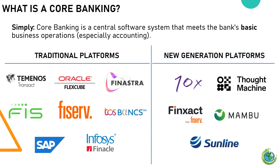What is a core banking system? Simply, core banking is a central software system that meets the bank's basic business operations, especially accounting. On the left are some traditional platforms of core banking: Teminos Transact, Oracle FlexCube, Finastra, FIS, Fiserv, TCS, SAP, Infosys, and Finacle. On the right are some new generation platforms of core banking: 10x, Thought Machine, Finsact from Fiserv, Mambu, and Sunline.